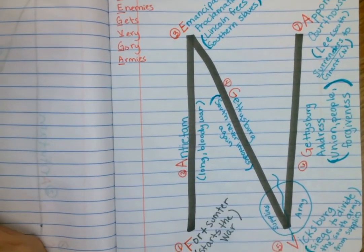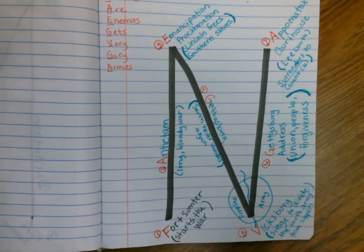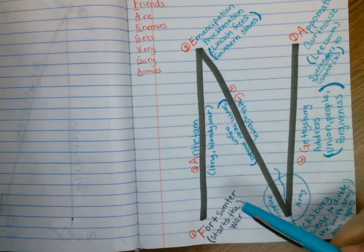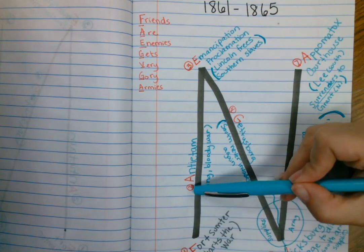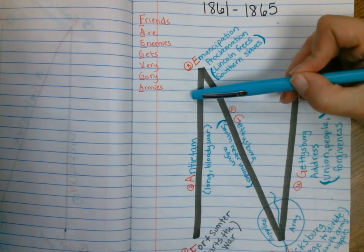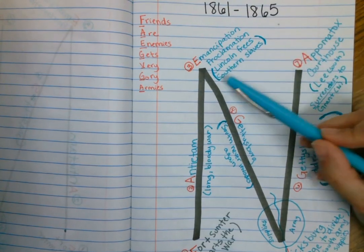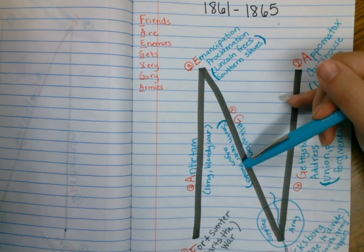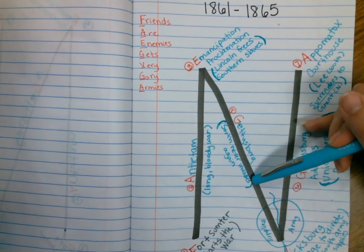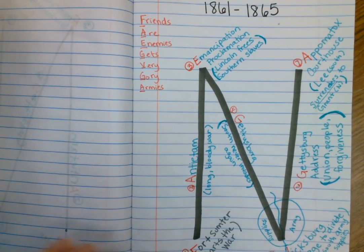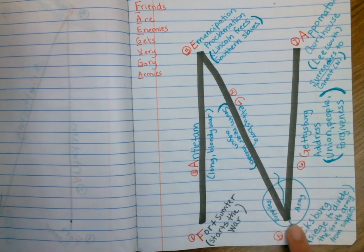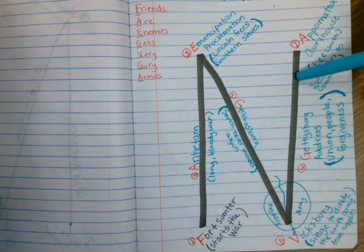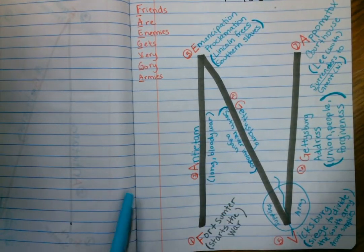So the war is officially over at Appomattox Courthouse. And so if you look at our events, you can see how that N really helps us remember those events of the Civil War. How we start in the South, we have this battle in the South, we're working our way up, it's going to be a long, bloody war. In the North, Lincoln issues the Emancipation Proclamation, freeing the slaves. We're going then with Gettysburg, where the South had tried to invade, but it didn't work out very well for them. At the same time of Gettysburg, you had the Siege of Vicksburg in the South, divides the Confederacy in two. Working our way back up for the people, the Gettysburg Address, and then finally the surrender at Appomattox Courthouse.